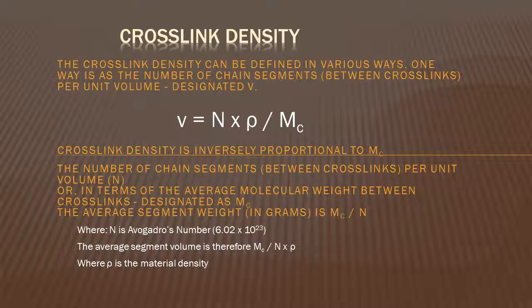n is Avogadro's number, 6.02 times 10²³, times ρ is the density, divided by Mc which is average molecular weight between cross-links.